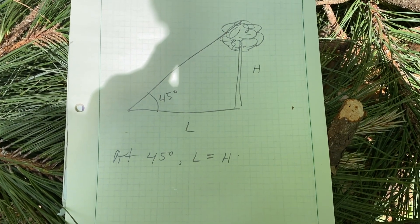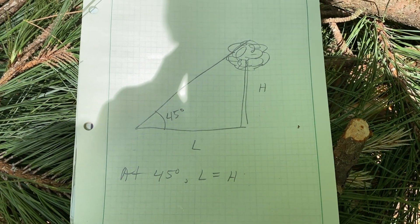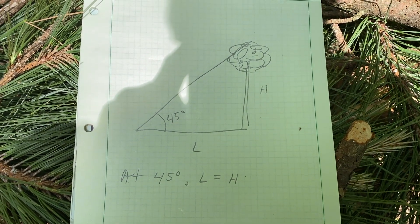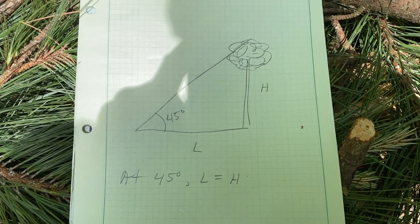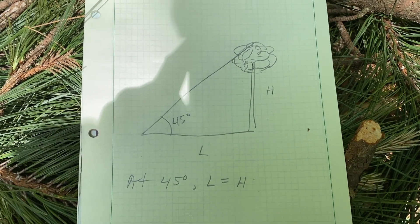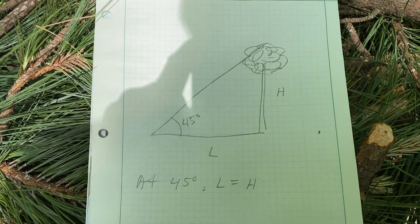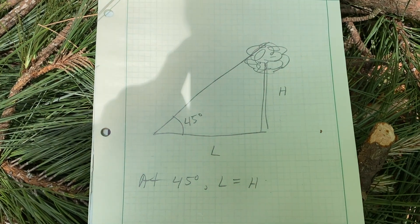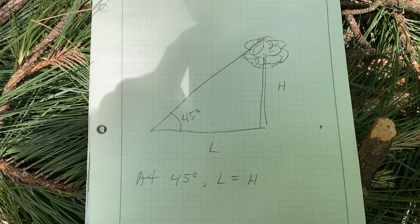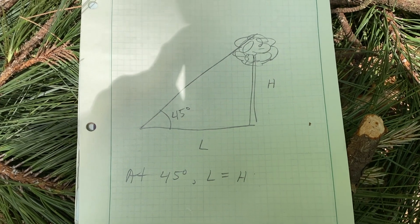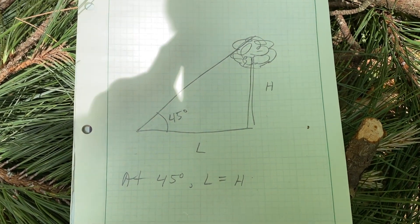Hey everybody, today I want to talk about a fairly common thing we need to know when felling trees — where is the tree going to fall? I almost always use this when I'm trying to cut down a tree in the yard or near a house or near a road, and you kind of need to know: is this tree going to go into the road, or is it going to get close to the house?